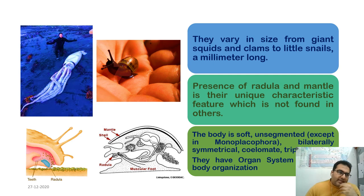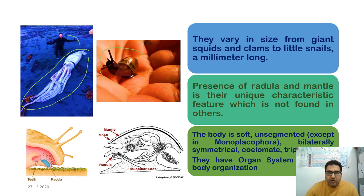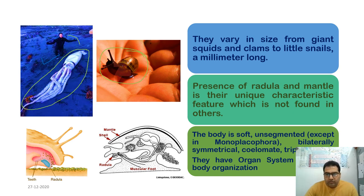Mollusks vary greatly in size — from giant squids, which can grow up to several meters, to small gastropods that can fit on the palm of a hand and measure only millimeters. They are soft-bodied and unsegmented organisms.